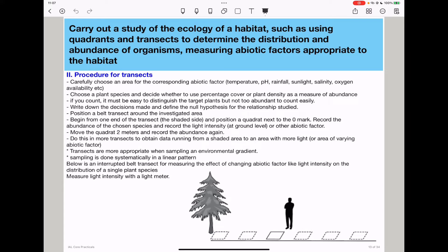Then you need to position a belt transect around the investigated area. You will begin from one end of this transect. Ideally, it could be from the shaded area and position quadrats next to the zero mark. Then you record the abundance of the chosen species and record the light intensity or temperature, whichever in this case. You can record the light intensity at ground level or any other abiotic factor that you're trying to study.